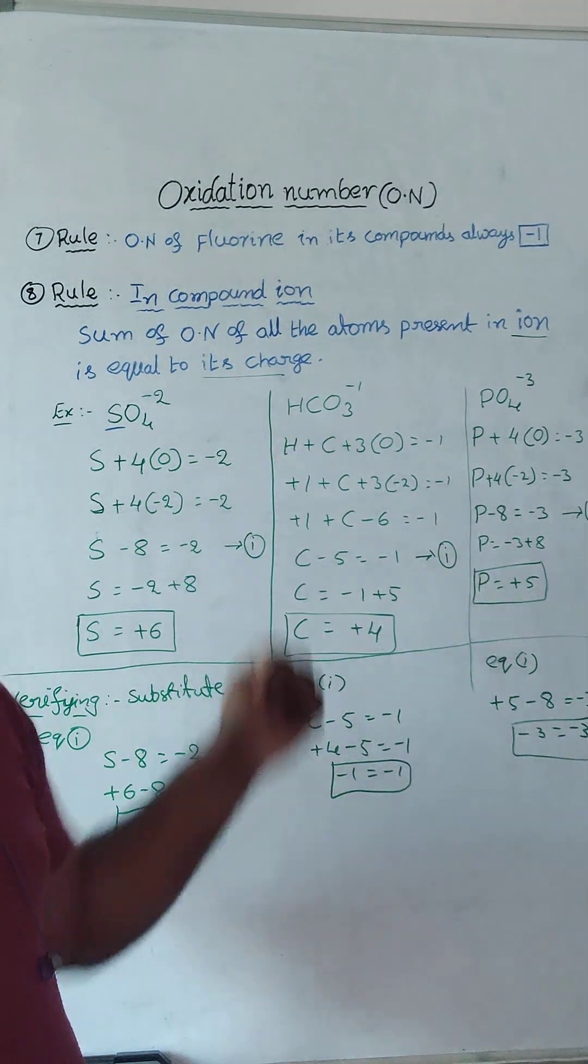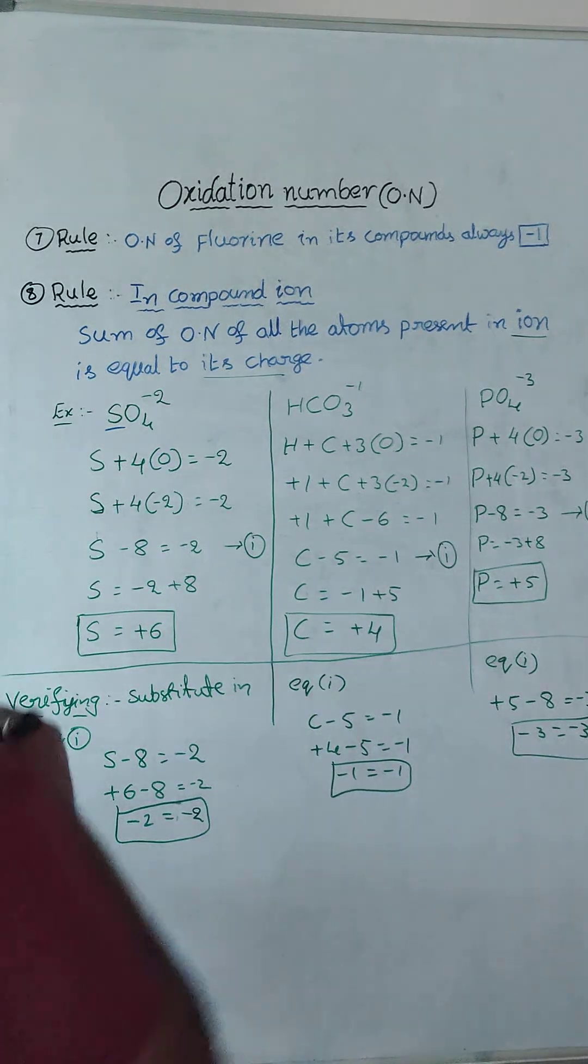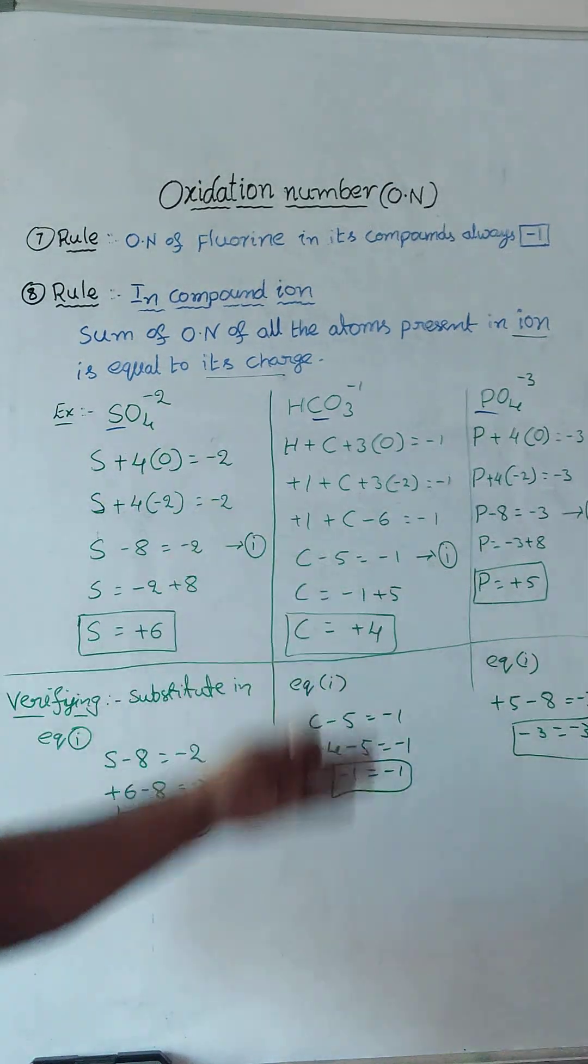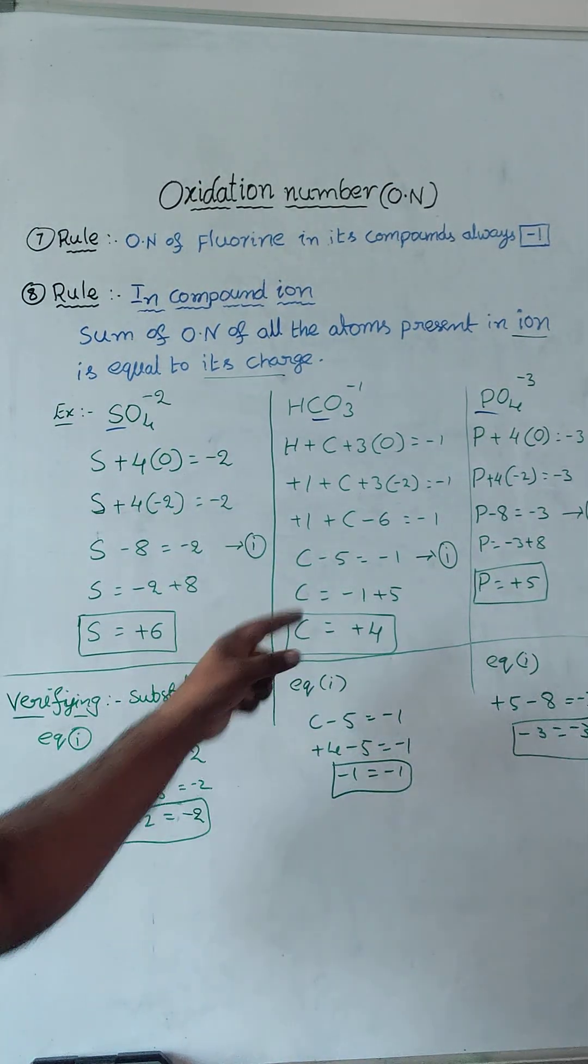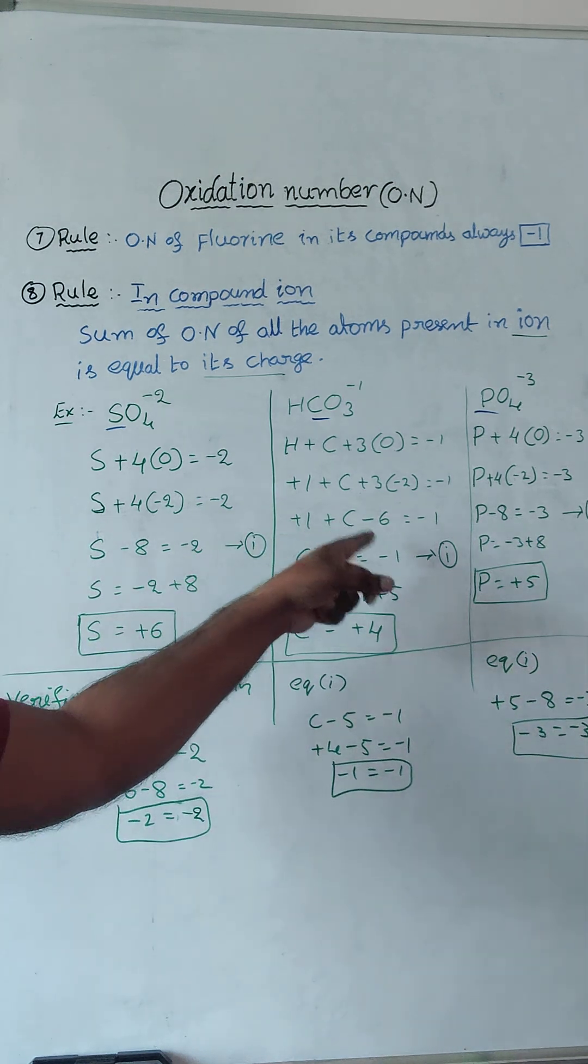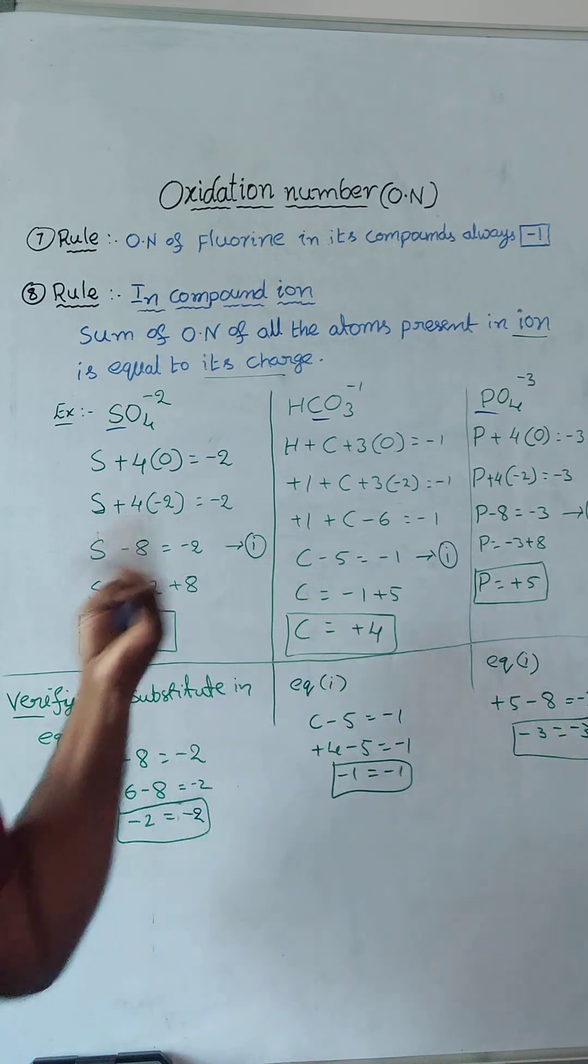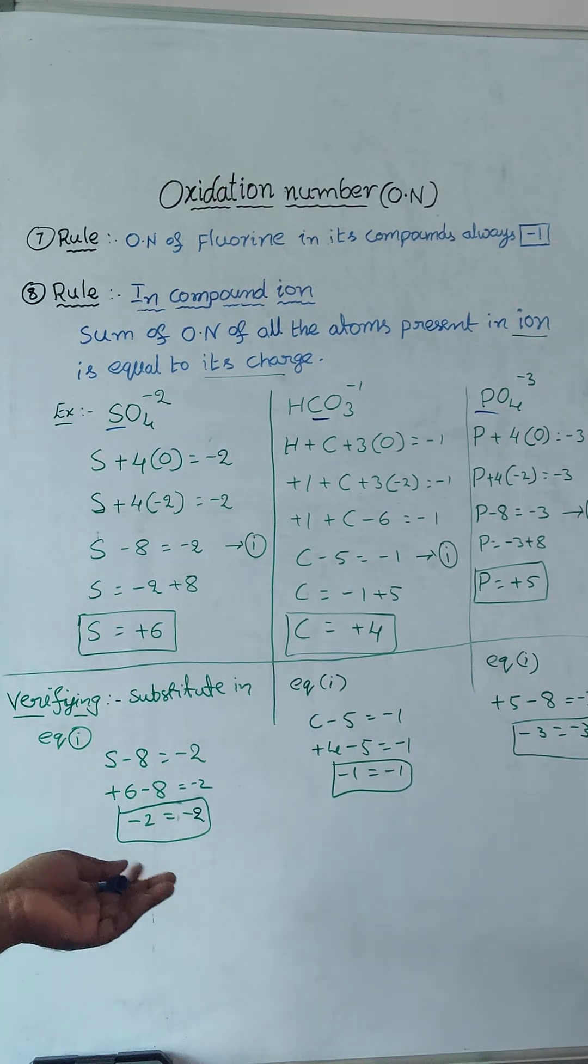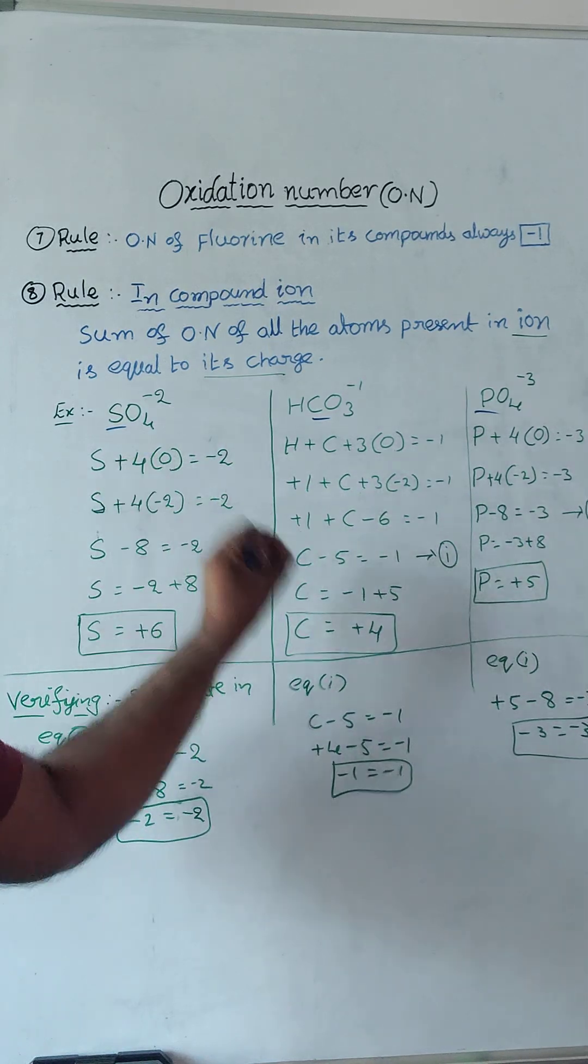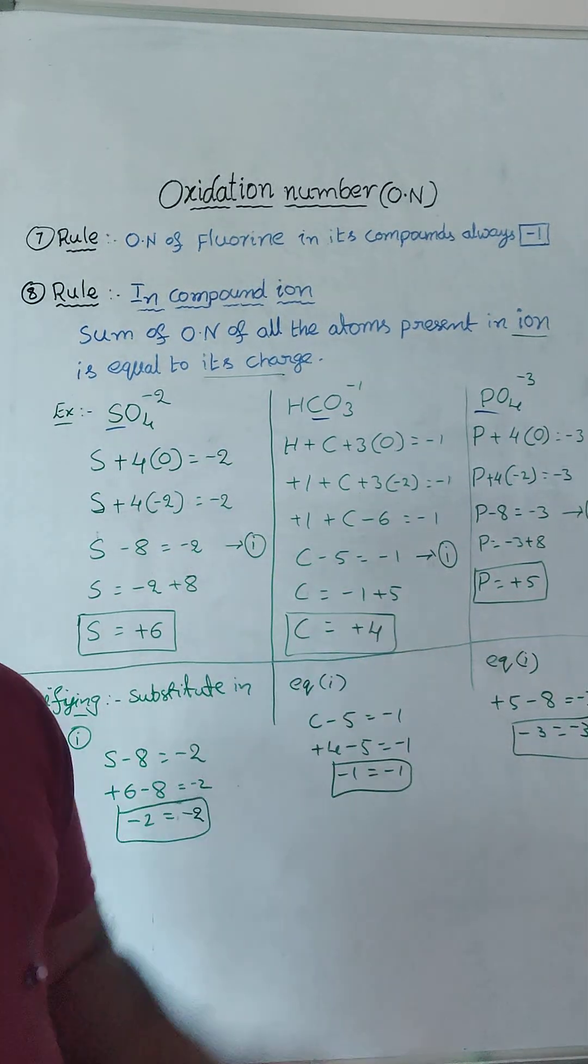Same for bicarbonate ion, calculate the carbon. Calculate the phosphorus in phosphate ion. Same steps to verify whatever we got the oxidation number of carbon, when we substitute in equation 1, we got it minus 1. Minus 1 is equal to minus 1, it is charge. So sum of all atoms which are there in ion is equal to its charge. We are proving in this way.